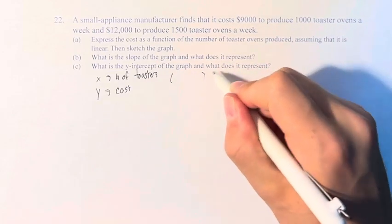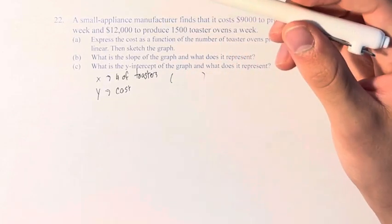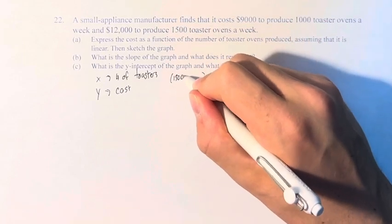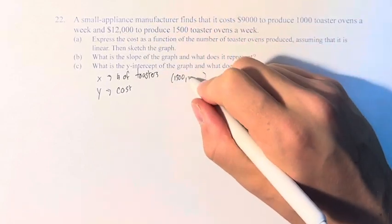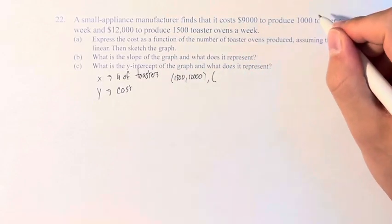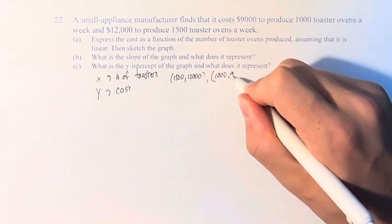So therefore, our two points are going to be 1,500 toaster ovens a week for $12,000, and 1,000 toaster ovens a week is $9,000.